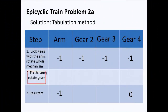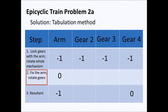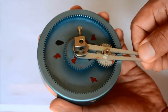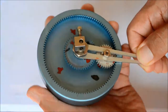For the next step we fix the arm, giving it zero revolutions. When we add it with negative one, we find that it has a resultant of negative one, which is our given. For gear four we will have plus one in the box, and negative one plus one gives us zero — the given for gear four. We can see the mechanism with the arm fixed and gear four rotated once.